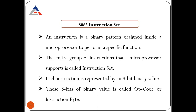We have a total number of 74 instructions which are bifurcated into 5 groups. The first group is data instructions, the second group is logical instructions, the third group is arithmetic instructions, the fourth group is control instructions, and the fifth group is branch instructions. All these 5 categories give a total of 74 instructions, and collectively it is called the instruction set.